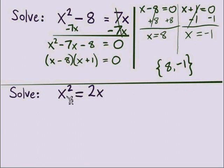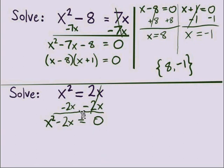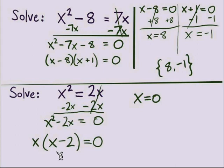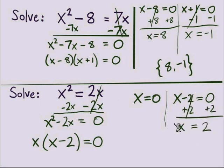For the second practice problem, our terms are not together on one side, so the first move is to subtract 2x from both sides, leaving 0 on the right and x squared minus 2x equals 0 on the left. Now we can factor — another example where the only factoring needed is the GCF. We factor out x to get x times x minus 2. Splitting into two equations: x equals 0 is our first solution, and for x minus 2 equals 0 we add 2 to each side, giving x equals 2. Our solution set is {0, 2}.